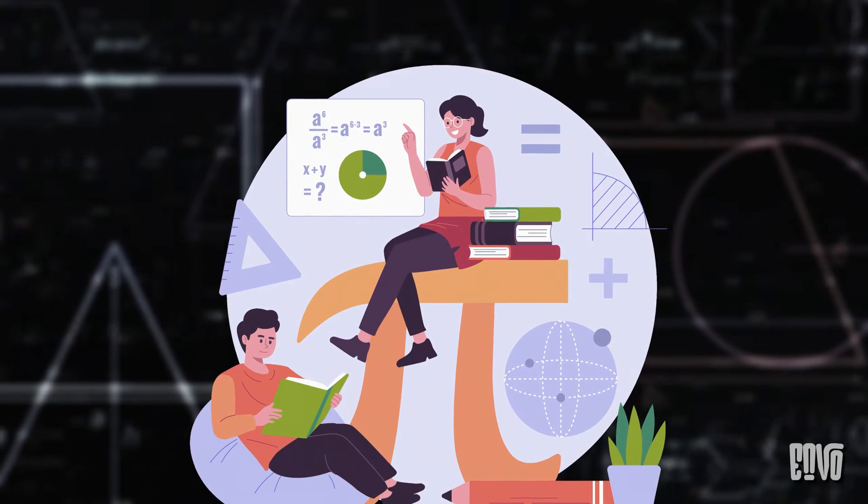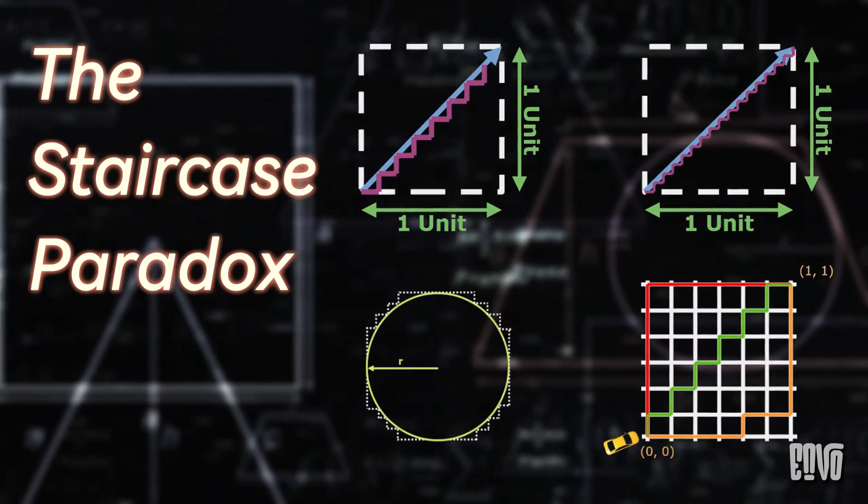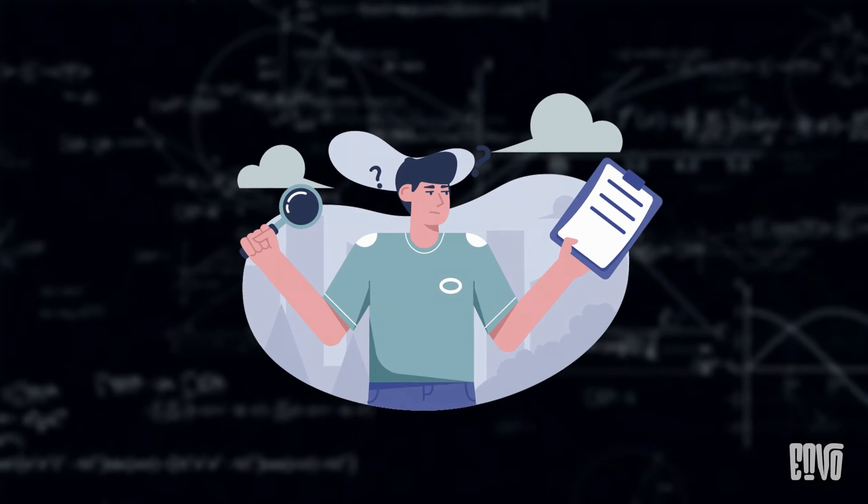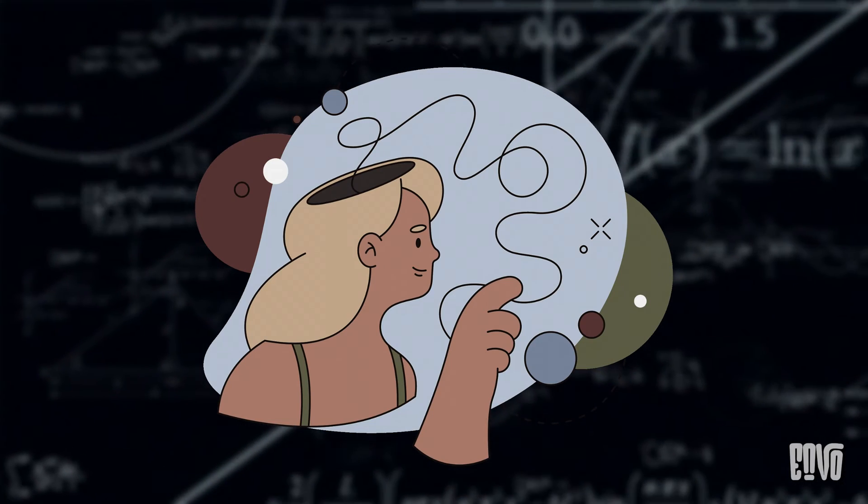Today, we're diving into one of those fascinating head-scratchers, the staircase paradox. It's a classic example of how our intuition about geometry can sometimes lead us astray, and it has some surprising connections to other famous mathematical puzzles.